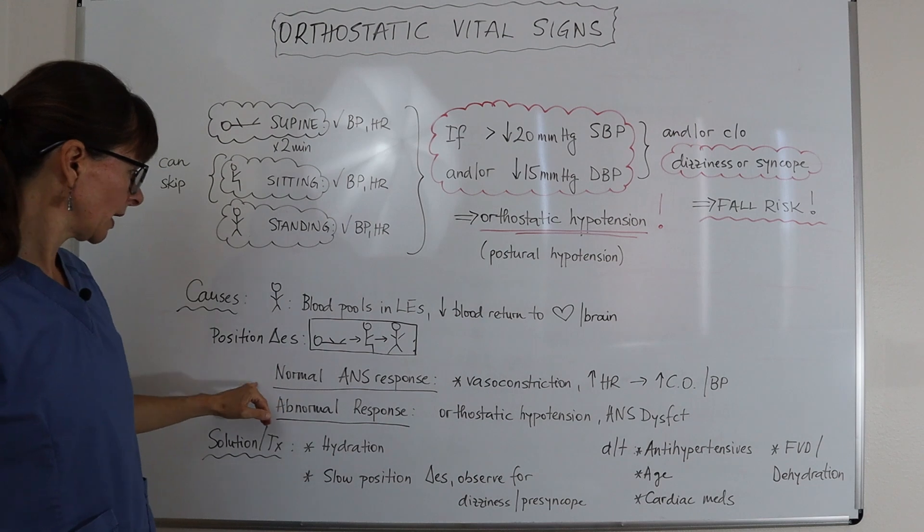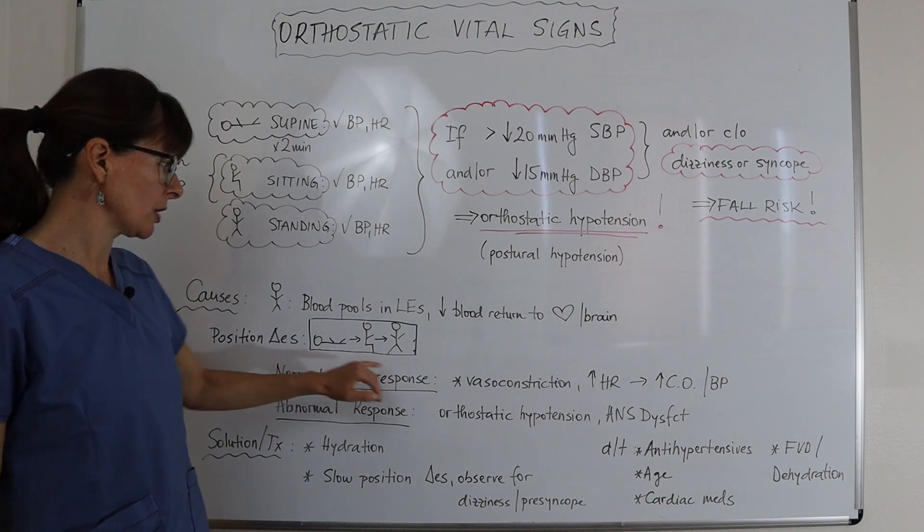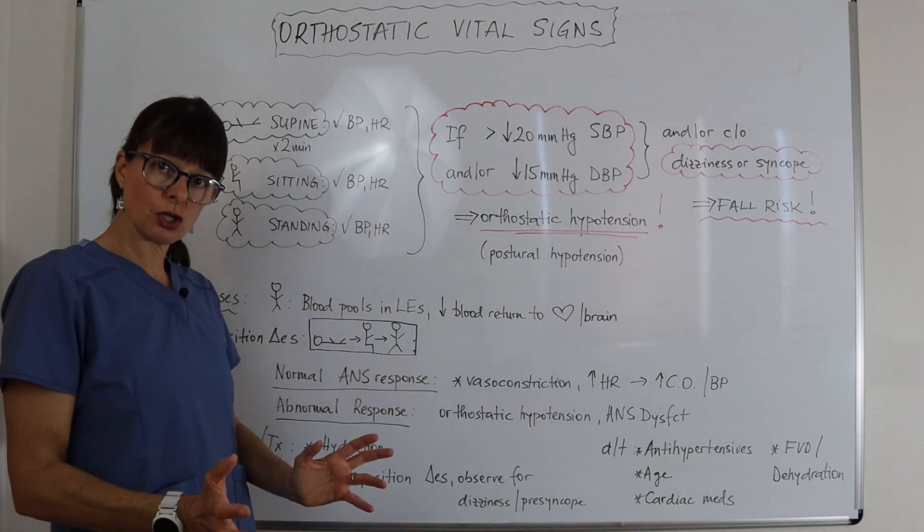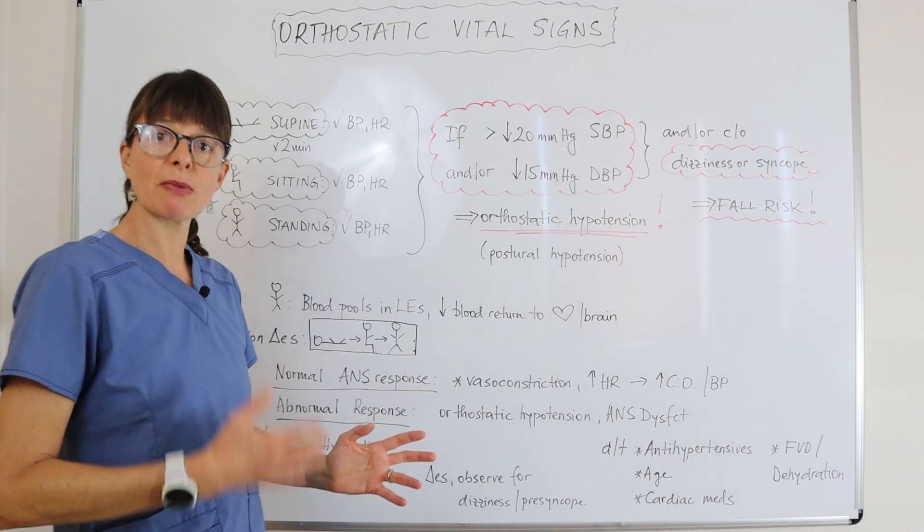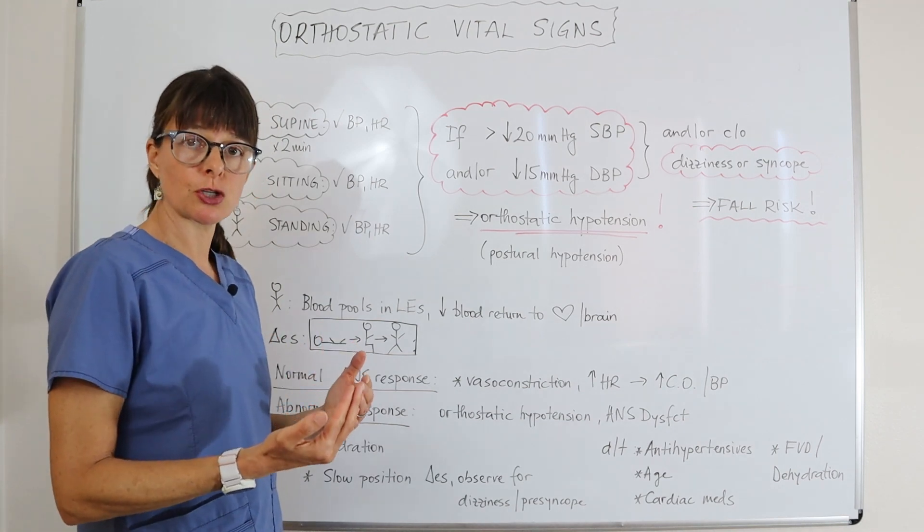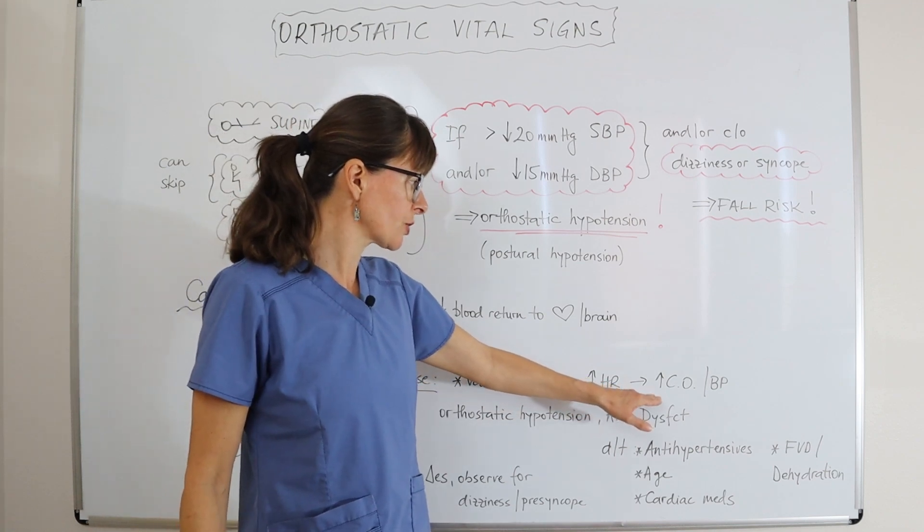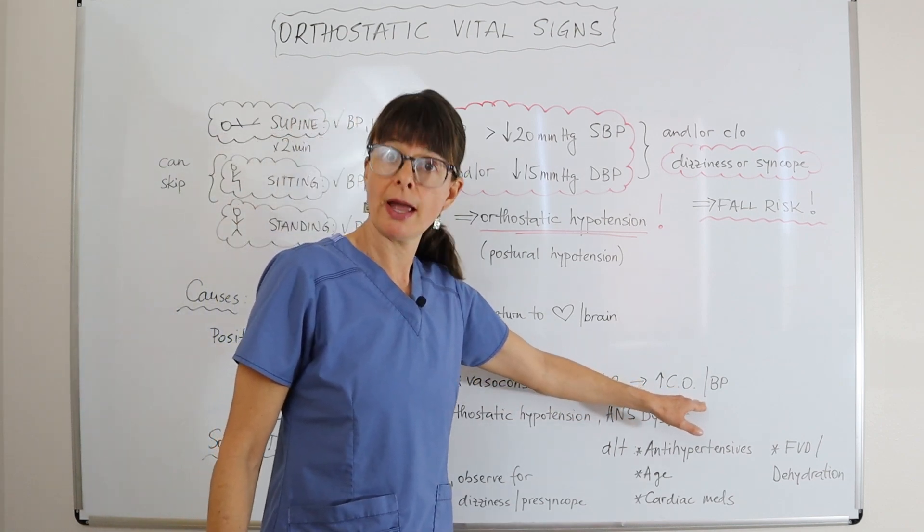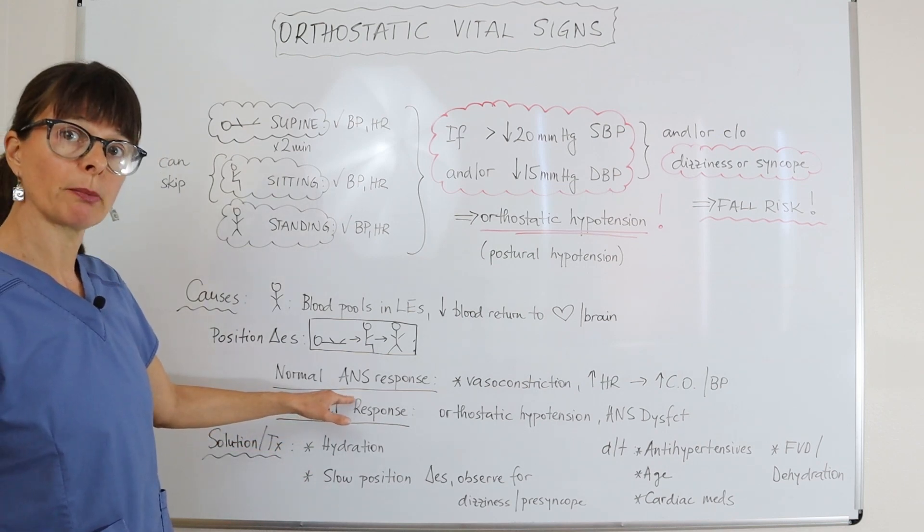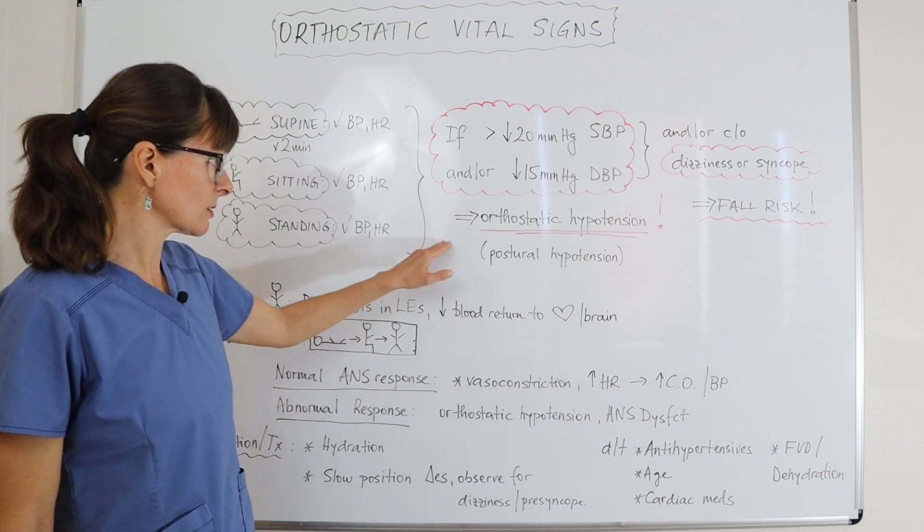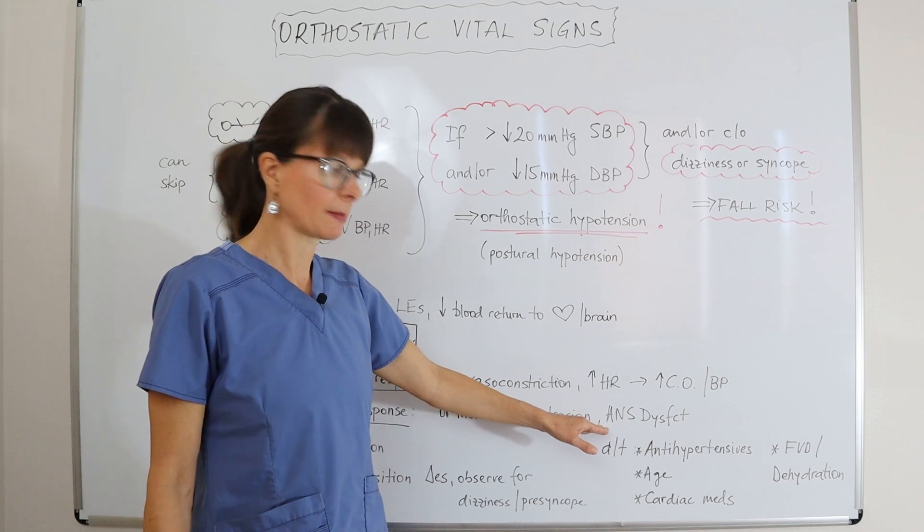Normally the autonomic nervous system responds to the postural changes by vasoconstriction, helping to get the blood into the right locations, meaning the heart and the brain, to keep the blood pressure up. That's also done by vasoconstricting and increasing the heart rate, which increases cardiac output and blood pressure. But if there's an abnormal response in the autonomic nervous system, then the patient has this orthostatic hypotension, and we also call this autonomic nervous system dysfunction.